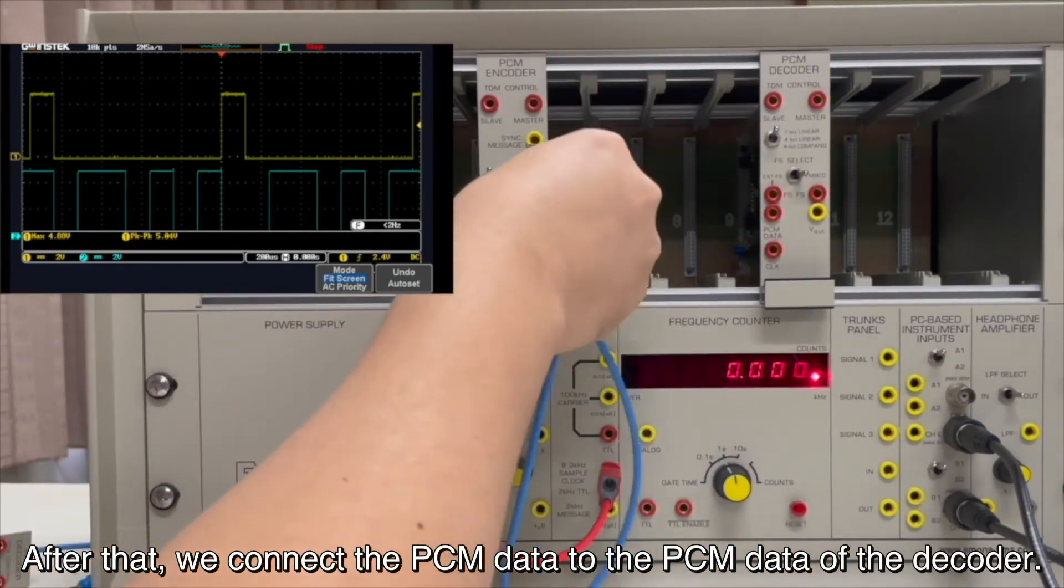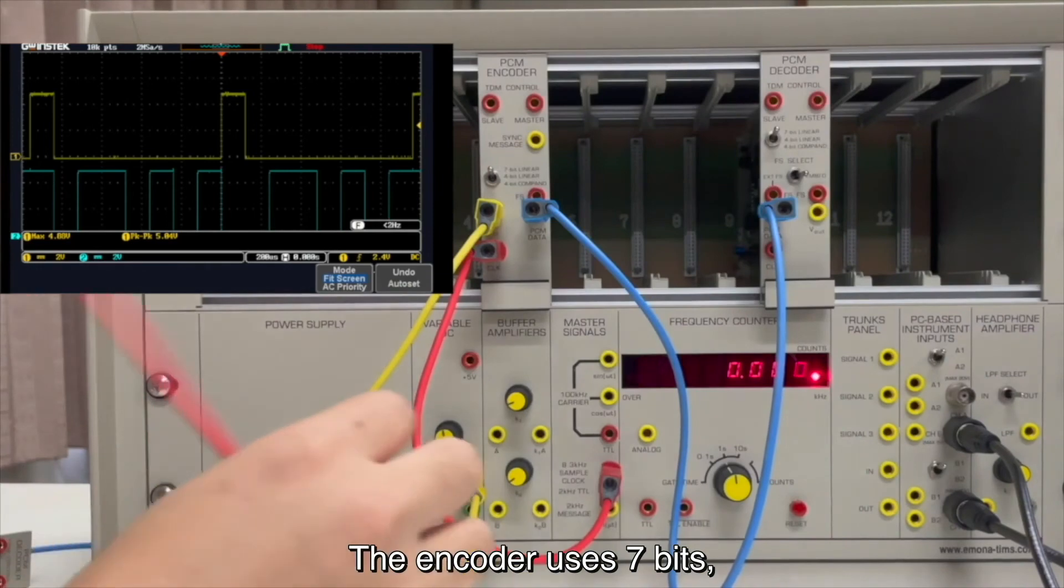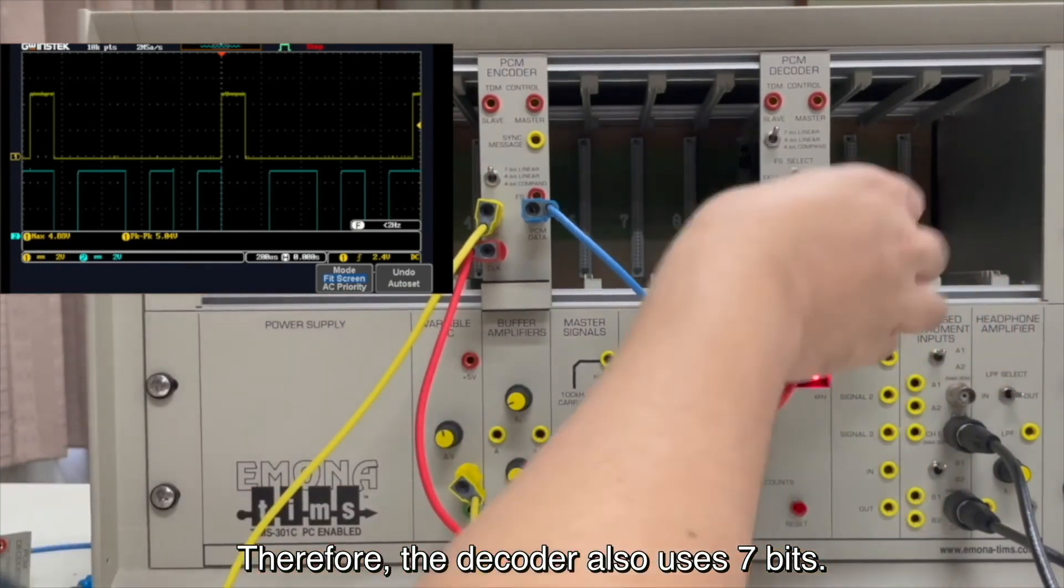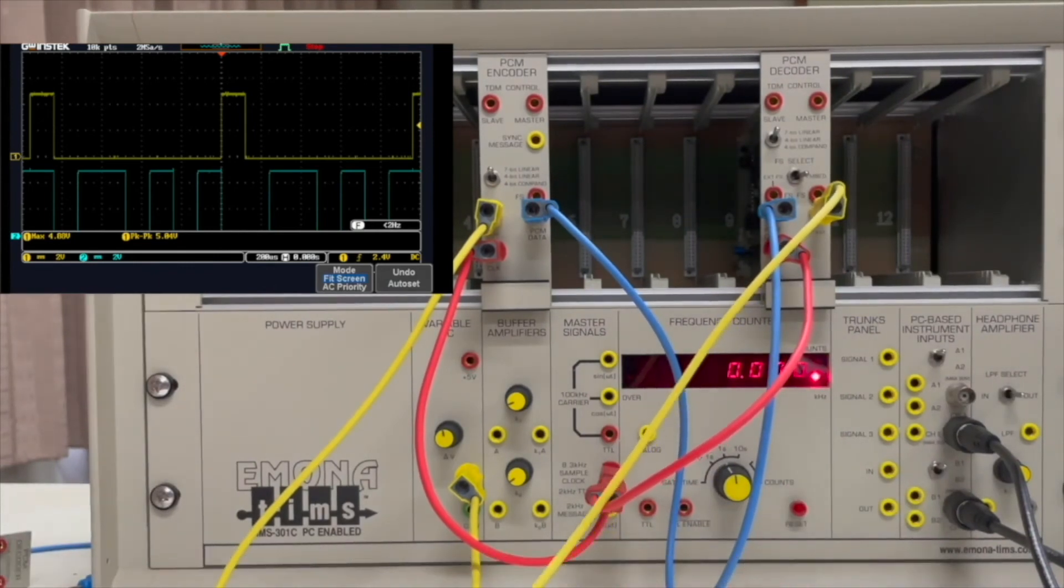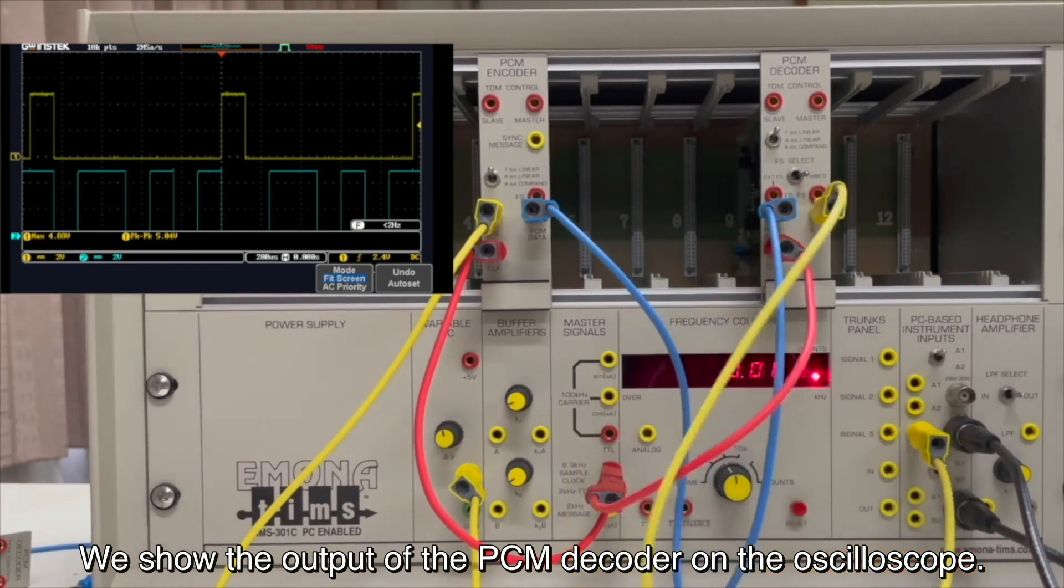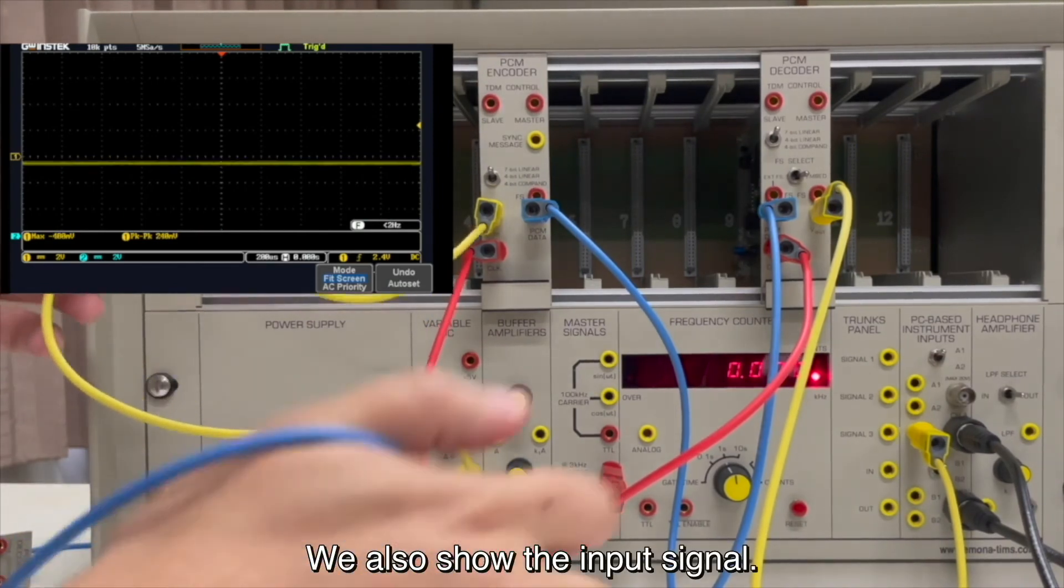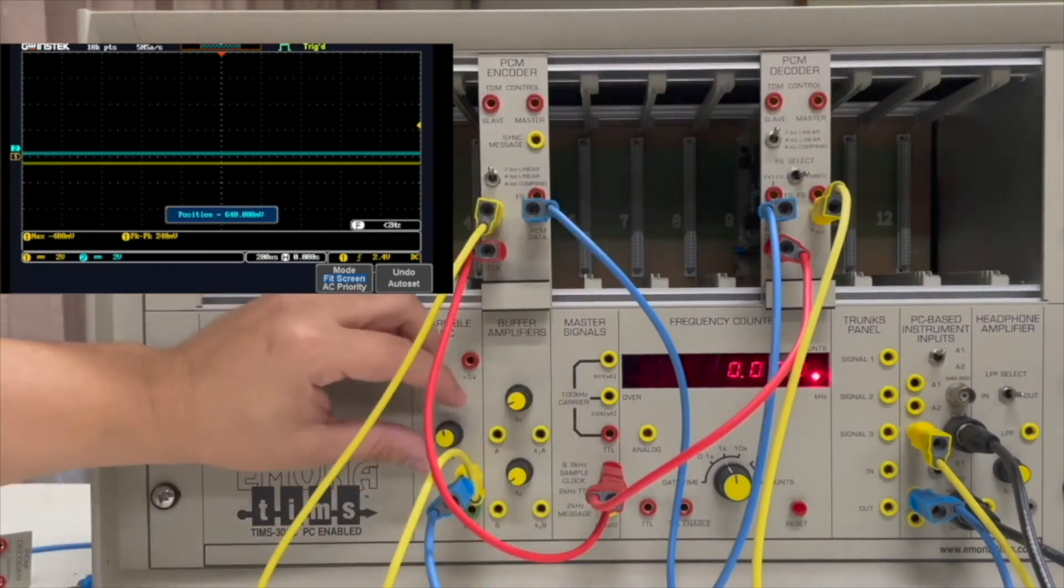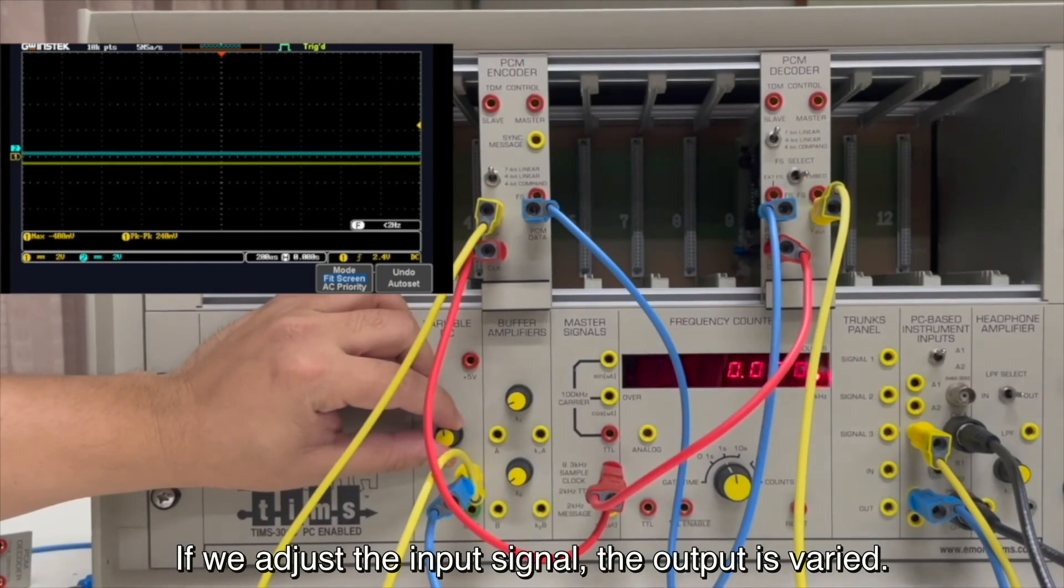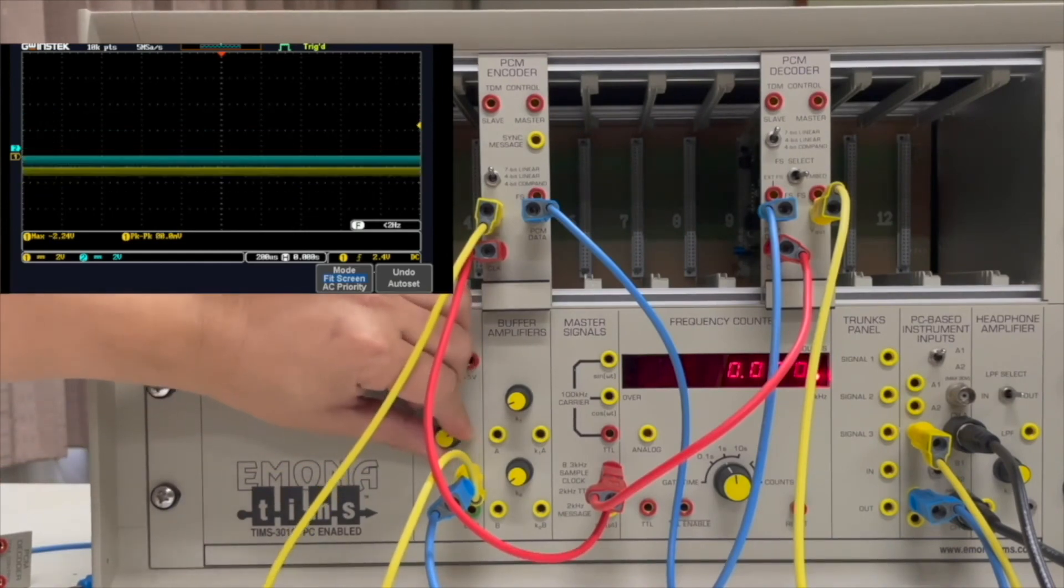After that, we connect the PCM data to the PCM data of the decoder. The encoder using 7 bits. Therefore, the decoder also uses 7 bits. Then, we use the same clock for encoder and decoder. We show the output of the PCM decoder on the oscilloscope. We also show the input signal. Now, the output is varied.